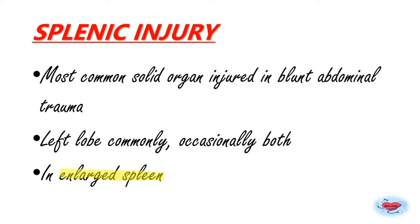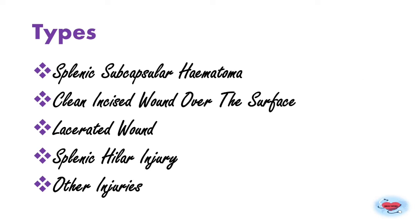Usually the left lobe of the spleen is affected more; occasionally both lobes are affected. Types of splenic injury include: splenic subcapsular hematoma (patients initially asymptomatic but may later present with torrential hemorrhage), clean incised wound, lacerated wound, splenic hilar injury (which can cause severe hemorrhage and even death), and splenic injury associated with left kidney, left colon, small bowel, pancreas, or left lung injuries.